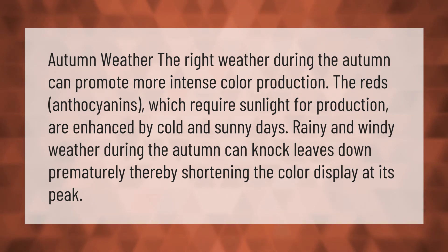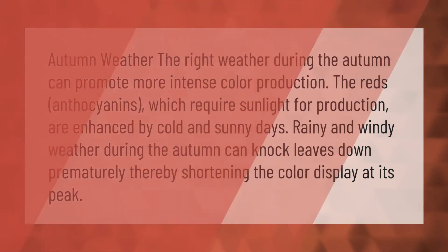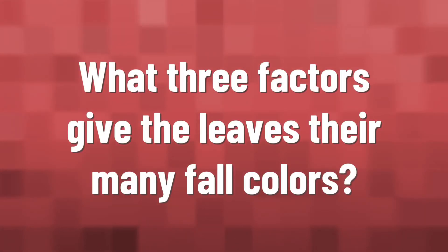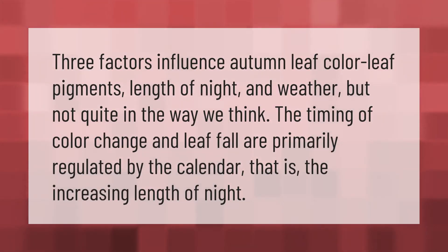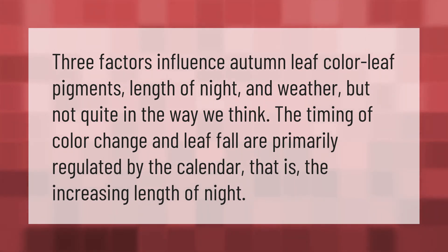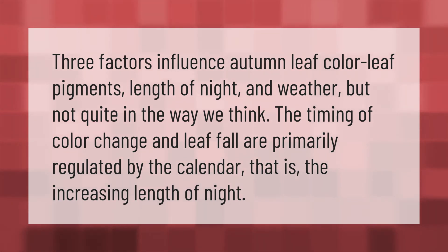Three factors influence autumn leaf color: leaf pigments, length of night, and weather — but not quite in the way we think. The timing of color change and leaf fall are primarily regulated by the calendar, that is, the increasing length of night.